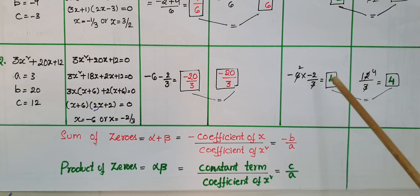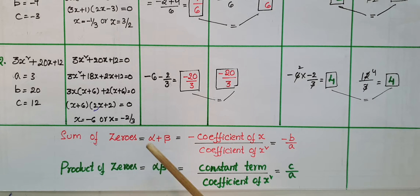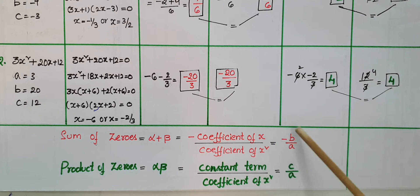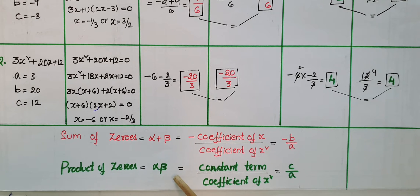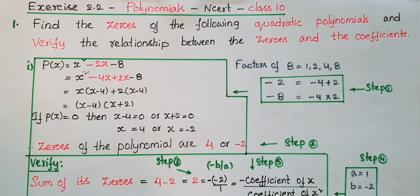Therefore we can see that sum of zeros = alpha + beta = -b/a, which is minus coefficient of x by coefficient of x². And product of zeros = alpha × beta = c/a, which is constant term by coefficient of x².